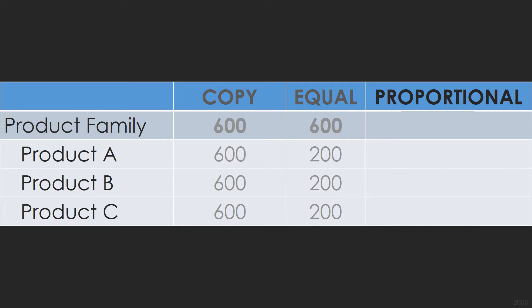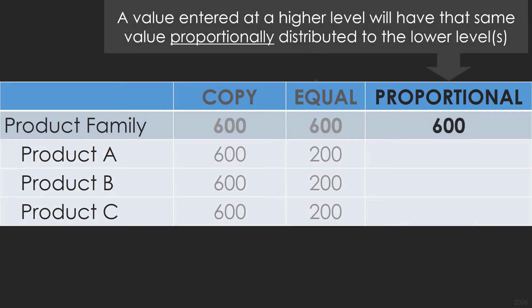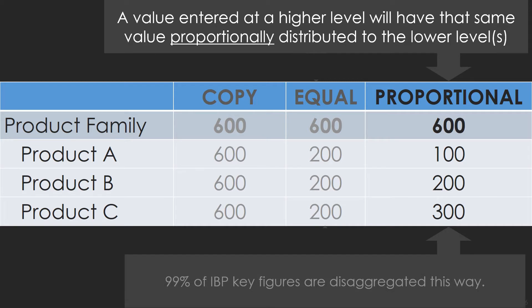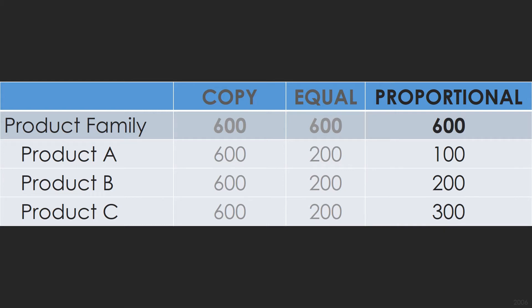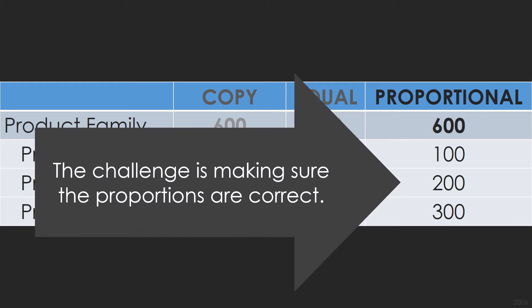Proportional. A value entered at a higher level will have that same value proportionally distributed to the lowest level. 99% of IBP key figures are disaggregated this way. The challenge is making sure the proportions are correct.